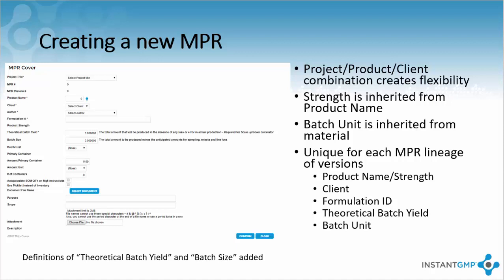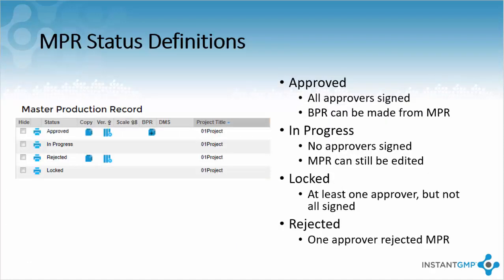The information for the material being produced is also inherited, allowing for consistent identifiers for the final good. Once the NPR has been created, it must undergo an approval process, and there are different statuses depending on the state of approval. Without any approval, the NPR is in progress, meaning it is still being edited and no approvers have signed off. Once one approver has signed off, the NPR becomes locked, which eliminates the ability to edit the NPR until someone unlocks it or rejects it.